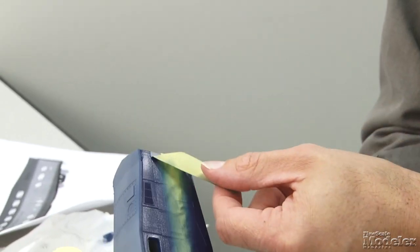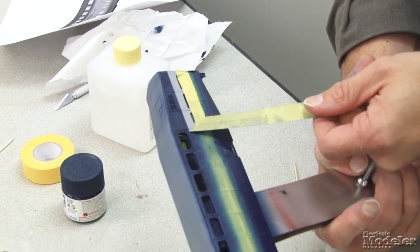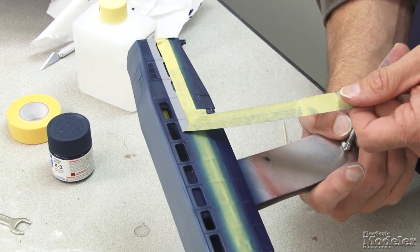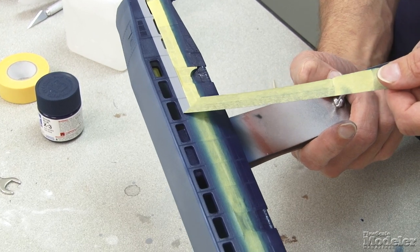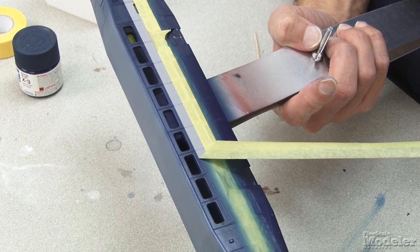And if you peel it back from the edge like this, it minimizes the tension and therefore the damage you're likely to do to the underlying paint. And it looks pretty nice.